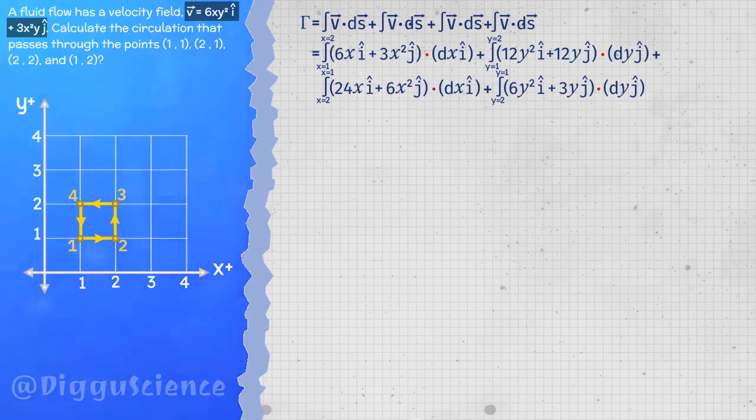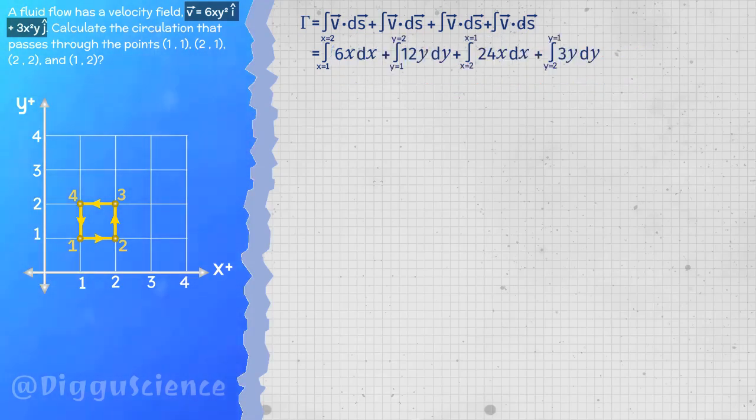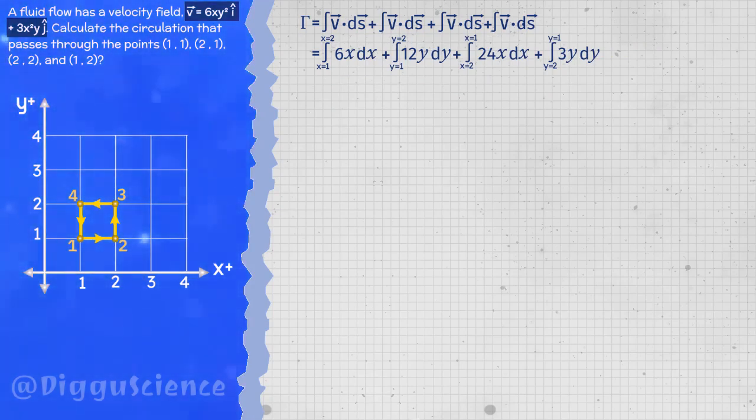Next is dot product. In dot product, the multiplication of unequal unit vectors will produce a value of zero. Now the integration process looks simpler.